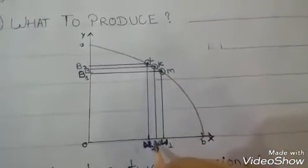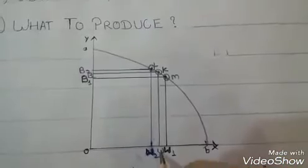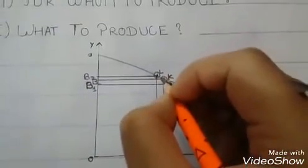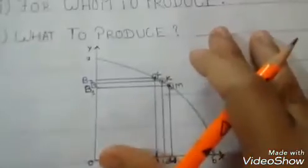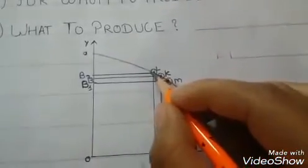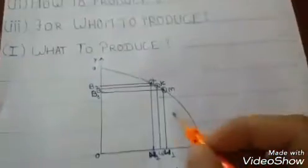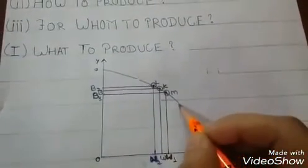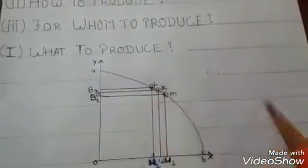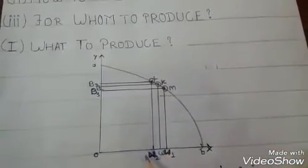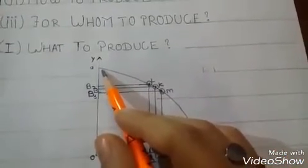Lekin jab hamne wheat ki production ko kam kar diya, W2 par kar diya W se, toh hamari barley ki production increase hogi B se B2 par, jise hum L point se denote karte hai. Yaani ki isse bahut clearly pata laga: jab production increase hoi ek product ki, toh dusre product ki production decrease hogi. Aur jab production ek product ki decrease hoi, toh production dusre product ki increase hogi.